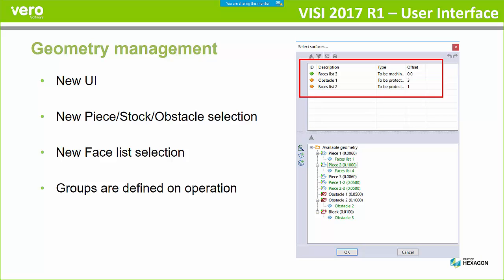We talked about the groups. The groups are actually defined in the operations. On the previous releases, the face group list was at the project level. Now it's actually inside the operation itself. So when you're selecting the facelists or anything that you want machined to, you can reorder it and you can actually set it to be protected, to be ignored, or set whatever the offsets are inside of this dialog box.